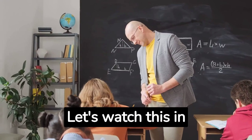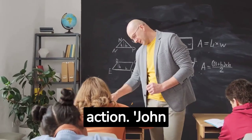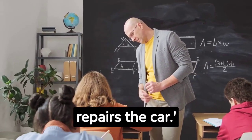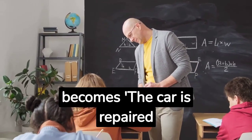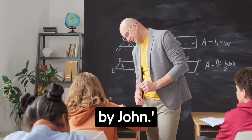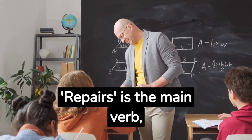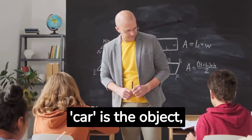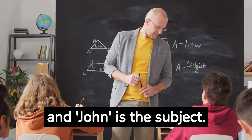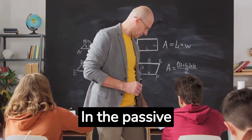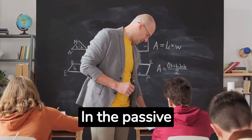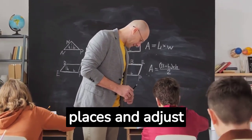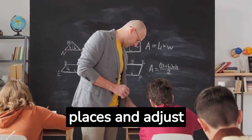Let's watch this in action. 'John repairs the car' becomes 'The car is repaired by John.' 'Repairs' is the main verb, 'car' is the object, and 'John' is the subject. In the passive voice, we switch their places and adjust the verb accordingly.